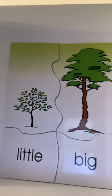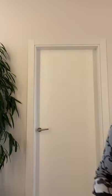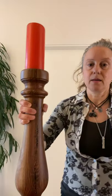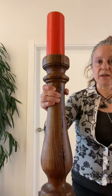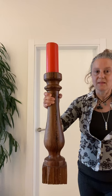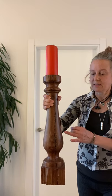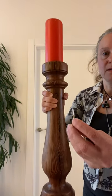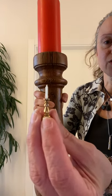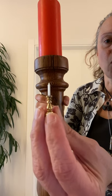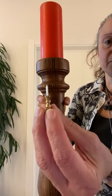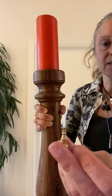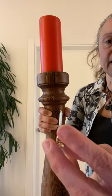Little and big. Here's a candle holder — it's really big. Here's the big candle holder and here's a candle holder and candle too. It's small. It's little. It's a little candle holder and candle.